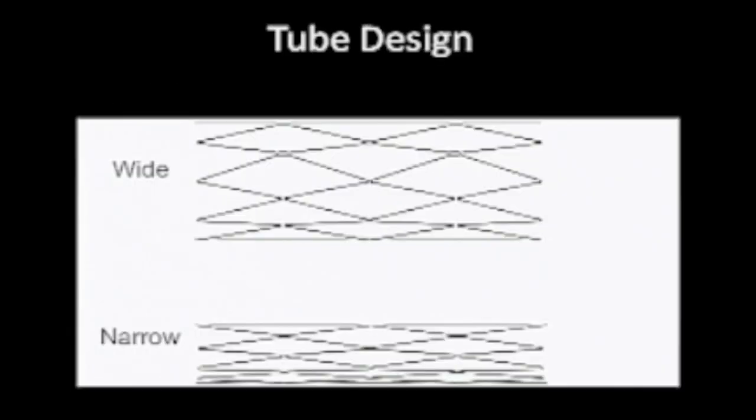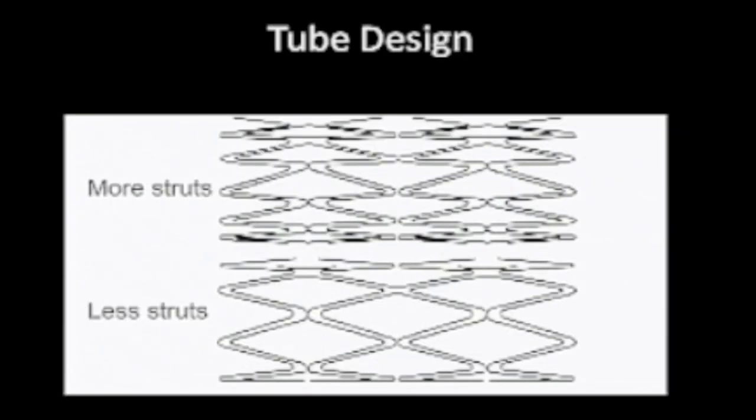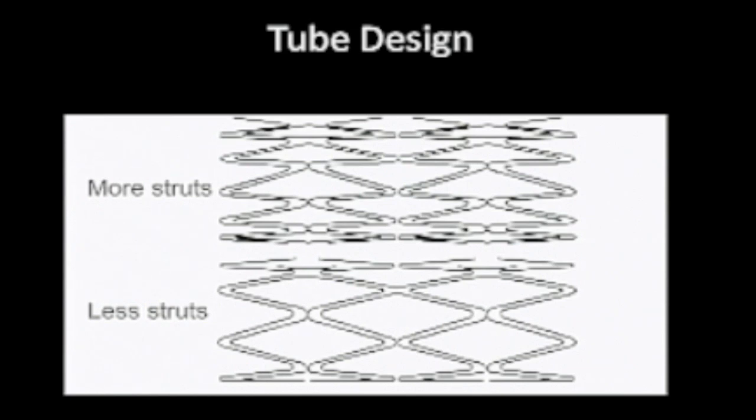Tube designs can be wide versus narrow with more or fewer struts. Thin struts range from 50 to 75 micrometers versus thick struts which go up to 140 micrometers. Literature reports that thin struts are associated with a reduction of restenosis in arterial applications, though there is very little data to support this in veins.